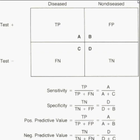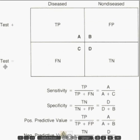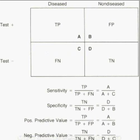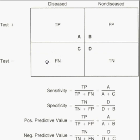A false positive means the test came out positive but I don't have the disease — it's a falsely positive exam. A false negative means I have the disease but the test said I didn't. That's bad news — you want to know when you have the disease so we can start treating it. And a true negative means you truly don't have the disease when the test told you that you don't have the disease. That's the category you really want to be in.